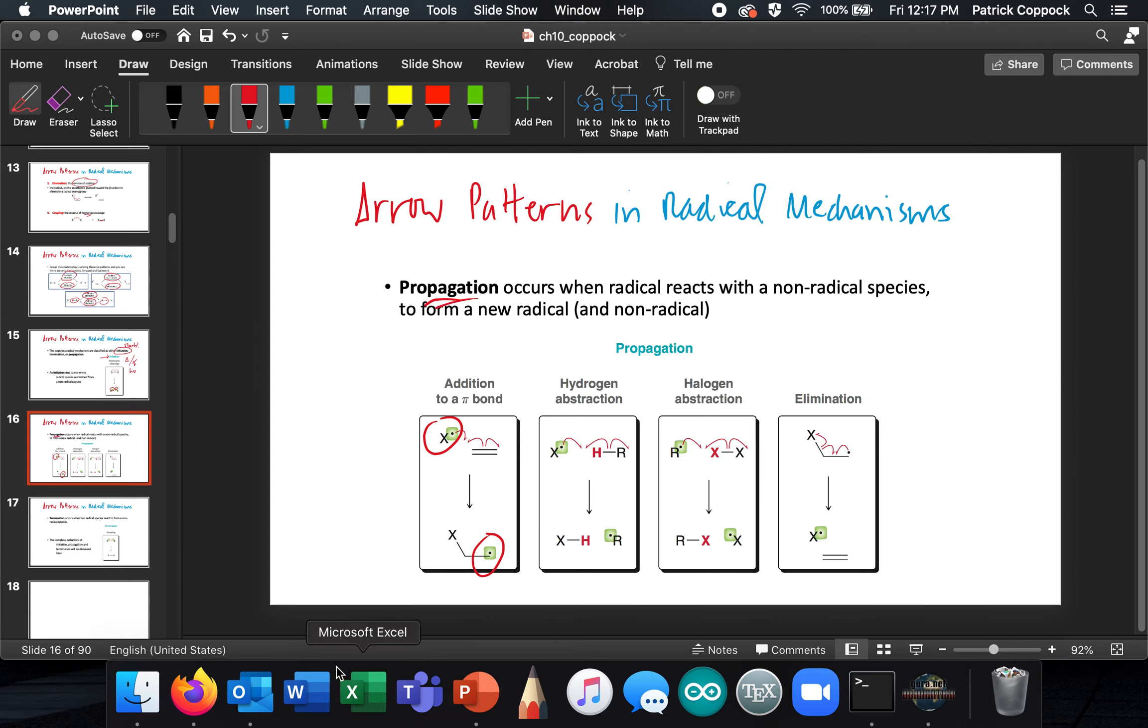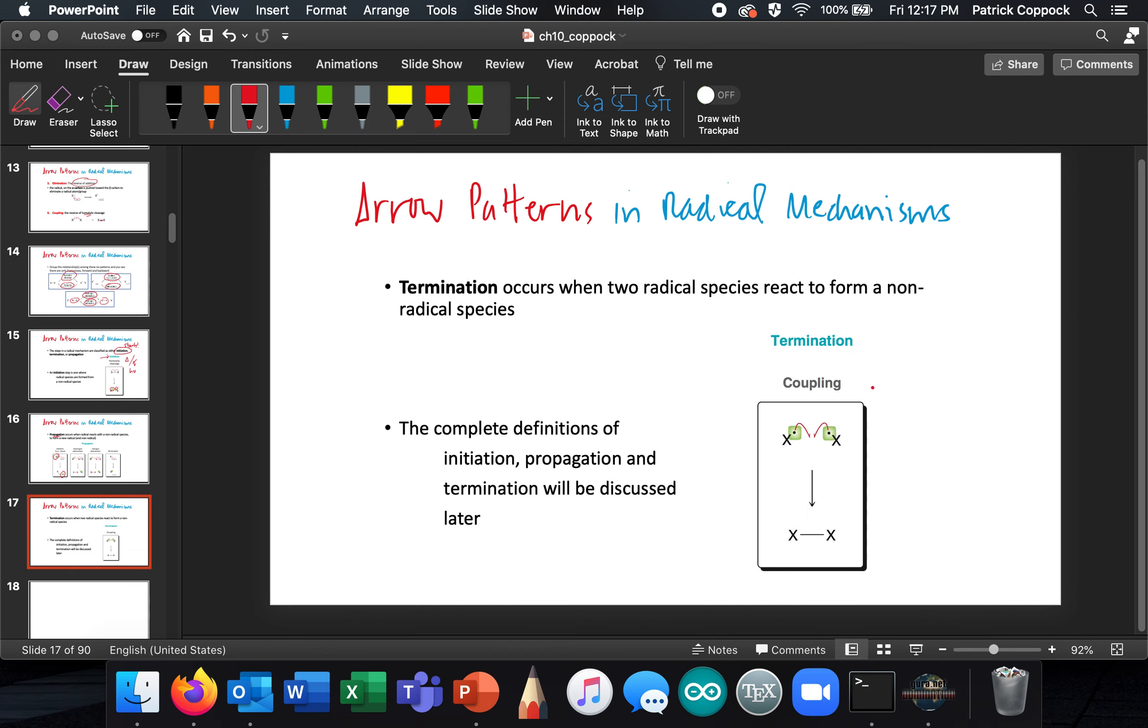And then termination is where we get two radicals that come together and make a bond. So the complete definitions of initiation, propagation, and termination are going to be discussed in future conversations, but this is sort of picking apart radical mechanisms and giving you a foundation for the conversations yet to come.